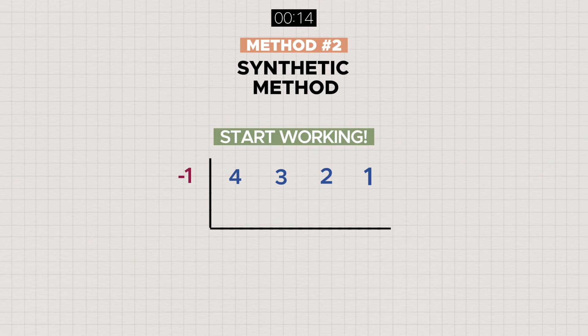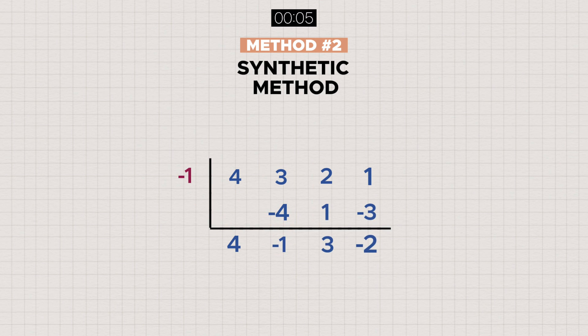Start off the working by bringing down the first number within the frame, multiply it as seen and write the product on the next column. Sum up the numbers within the column and repeat this process. Lastly, express your answer with a reduced degree.